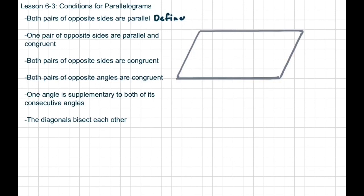The next one says both pairs of opposite angles are congruent. So I could have something like this — these two angles are opposite of each other, and these two are opposite of each other — but it has to be both pairs.